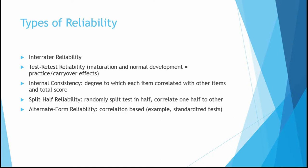Another type of reliability is internal consistency, which is calculated statistically. Here we want to see the degree to which each item in the test is correlated to other items and to the total score. If we have 10 questions measuring depression and one item doesn't correlate very well with the others, we start to think that item isn't really measuring the same thing as the other items — it's not internally consistent.